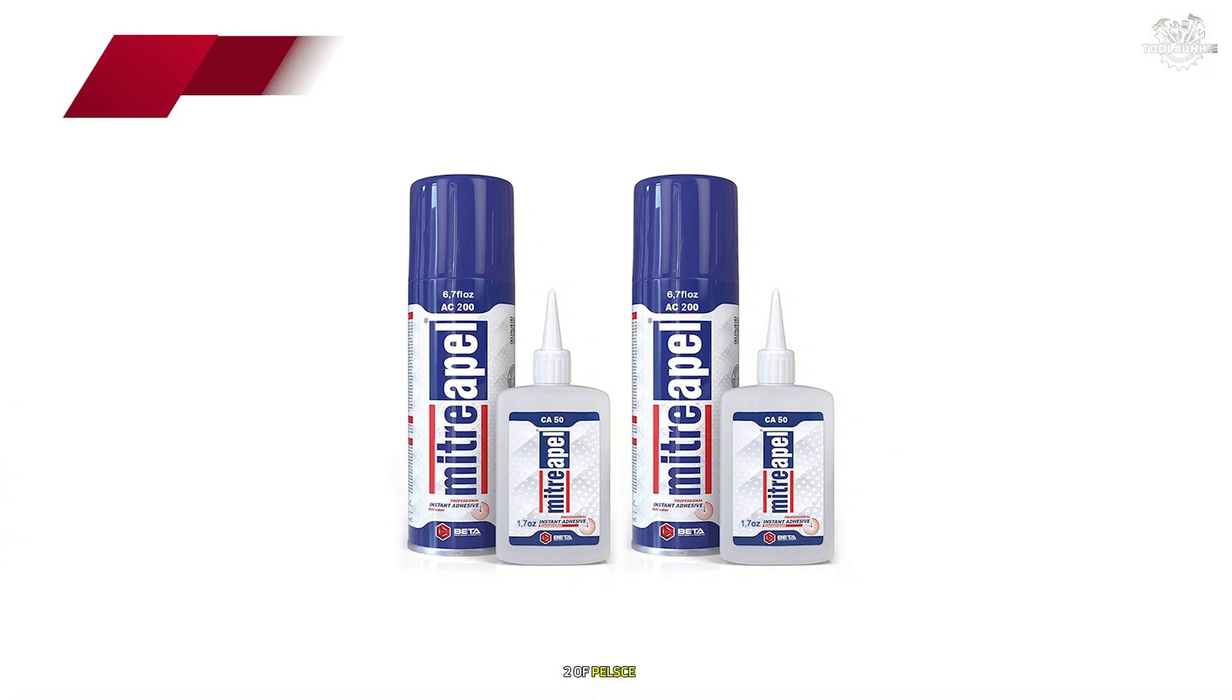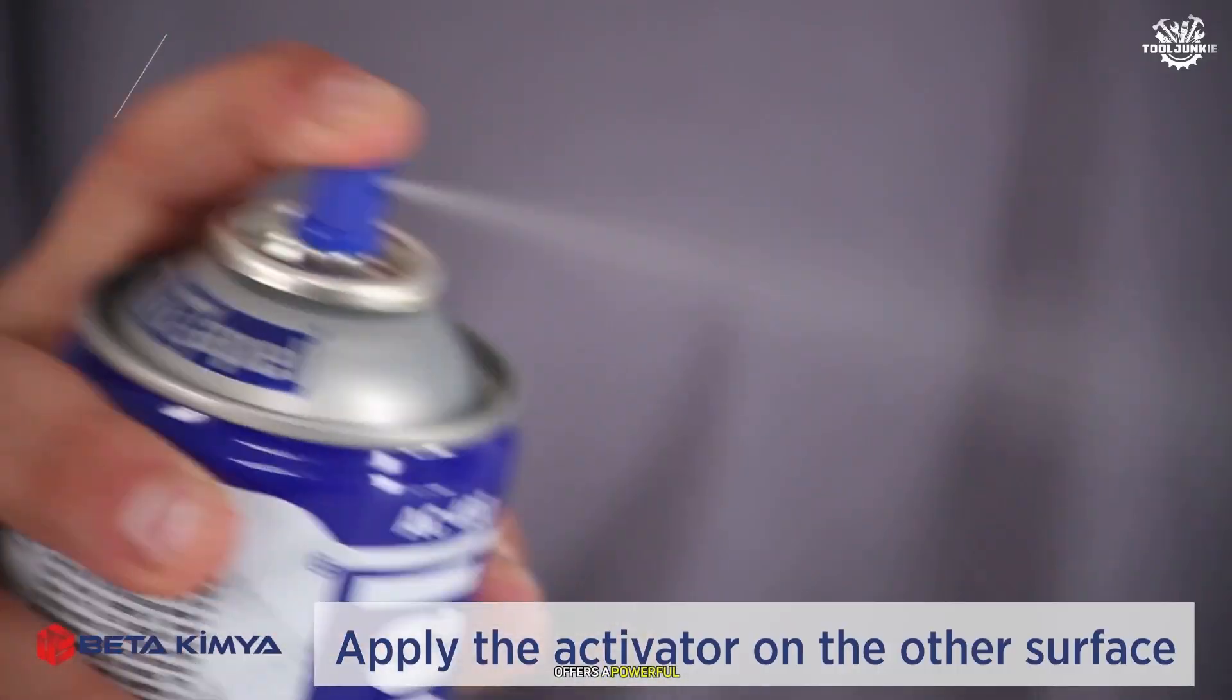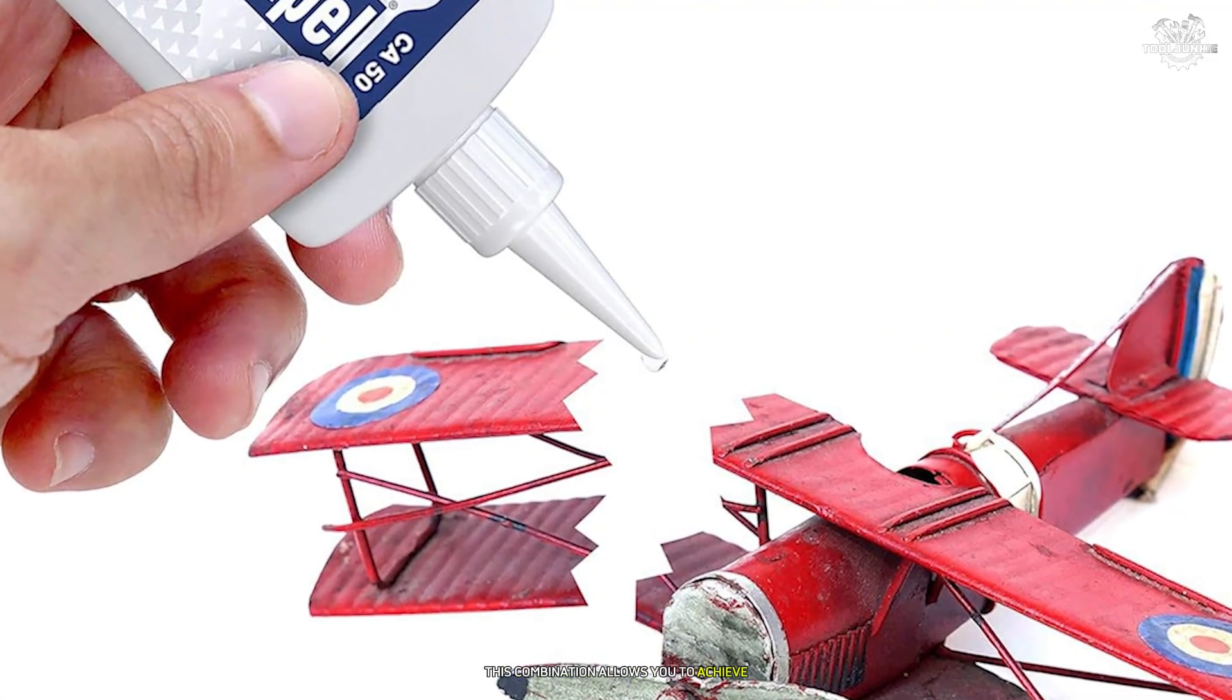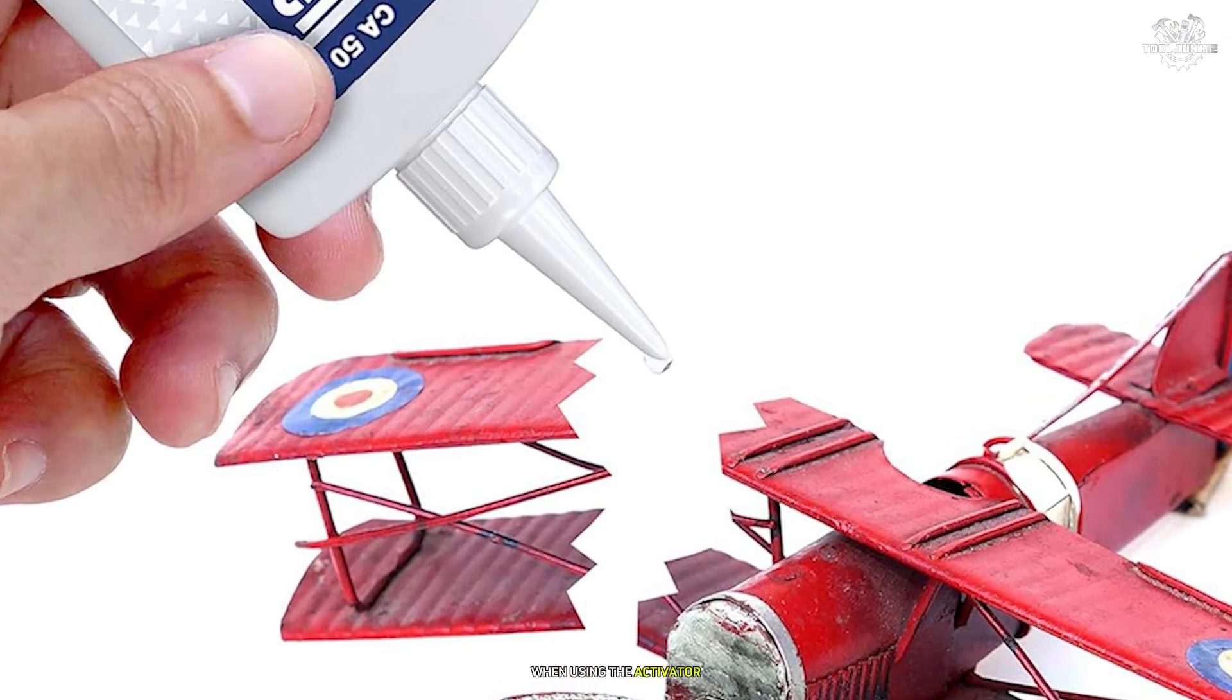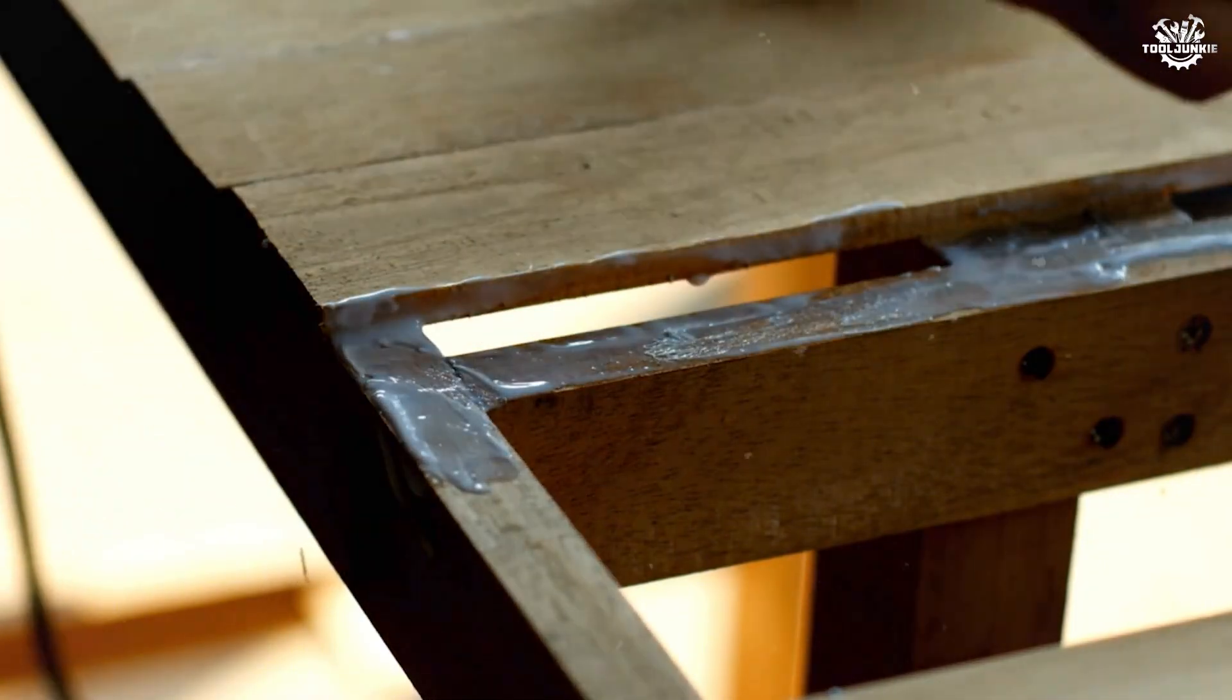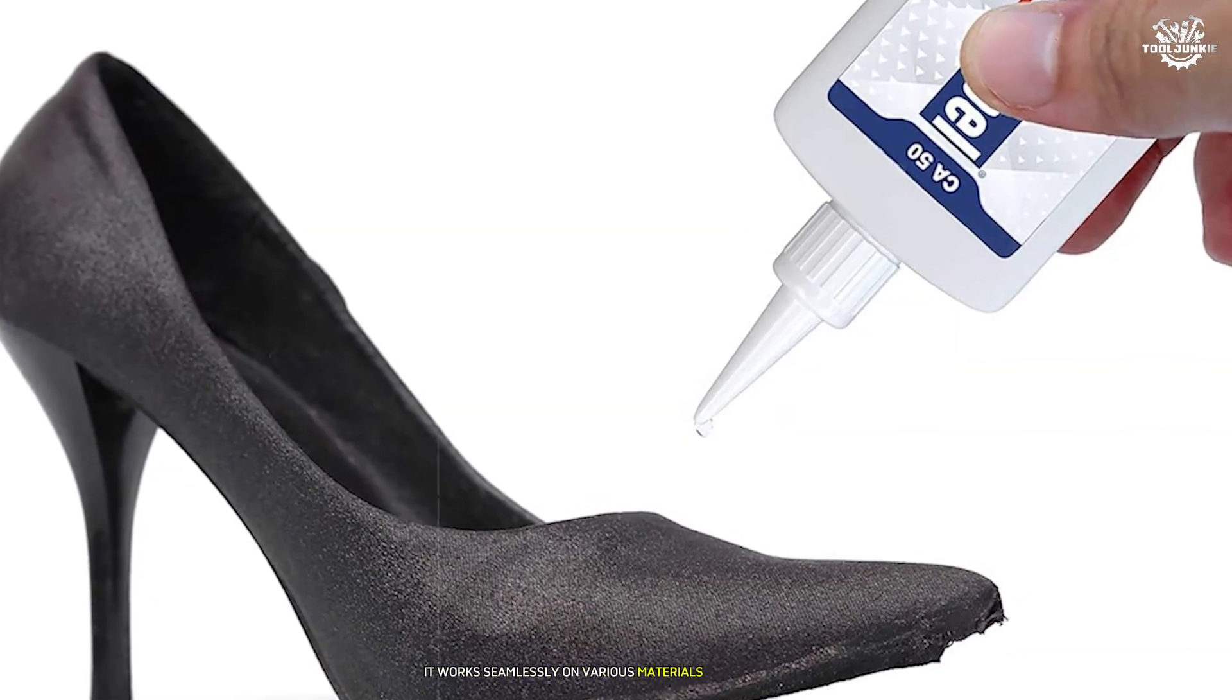Number 2. Tua Pell CA glue. The MITRE Pell CA glue, paired with its spray adhesive activator, offers a powerful two-part bonding system that delivers exceptional results in record time. This combination allows you to achieve strong bonds within 5 to 12 seconds when using the activator, perfect for high-stress joints or large-scale PLA projects requiring immediate results.